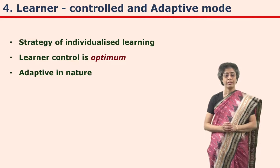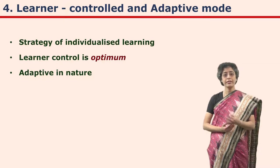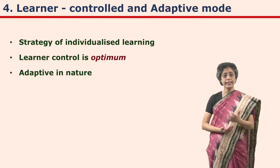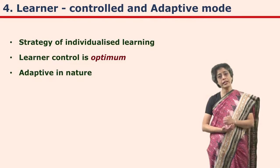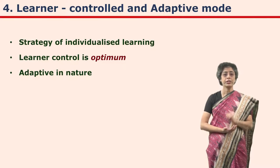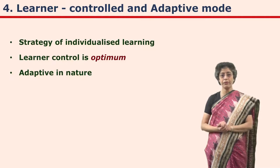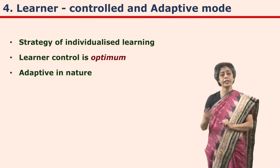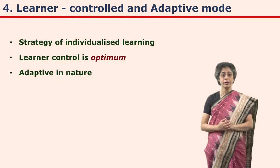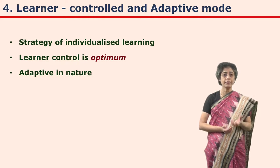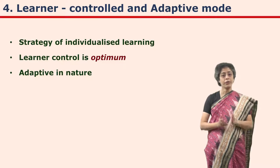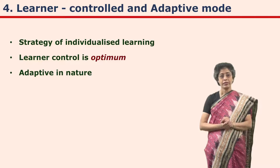CI is a strategy for individualized learning, so learner control is optimum. The learner can progress as per their own speed — it is a self-paced learning activity. The learner can click on the next step whenever he or she wants, and can decide which media or mode to use for learning. The learner can choose to watch video, see more graphics, go into practice mode, play games on the same subject, or go through a simulation sequence. A good CI can be truly adaptive in nature.